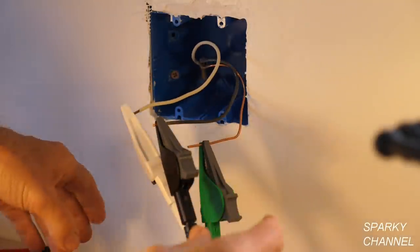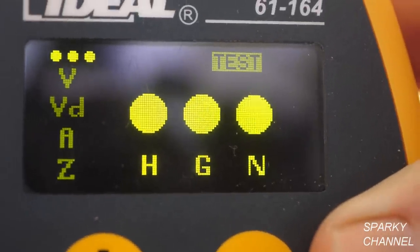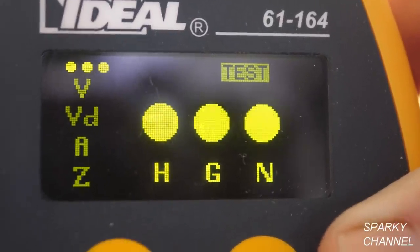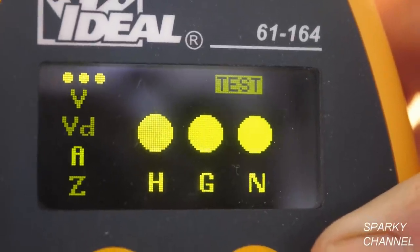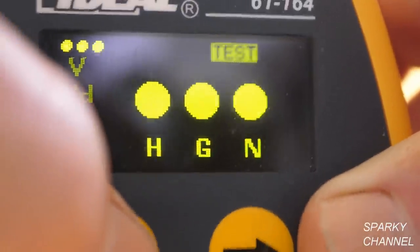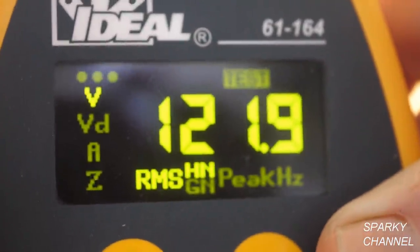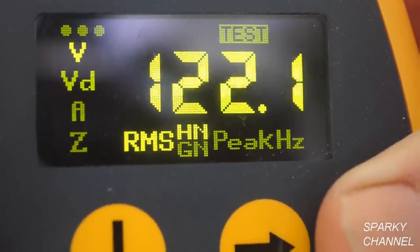And I'm going to go turn the circuit breaker on. So with the tester connectors connected to all three of the wires, we see that the hot, the ground, and the neutral are all good because the lights light up. And we press the button down one and we have 121.9 volts AC, which is excellent. It's a good strong voltage.